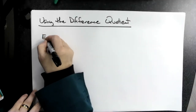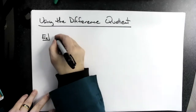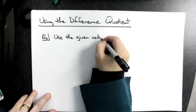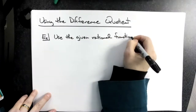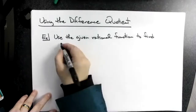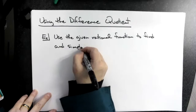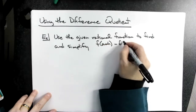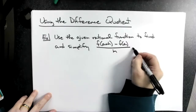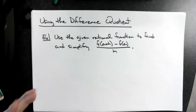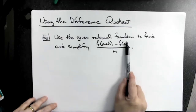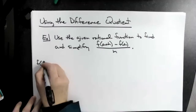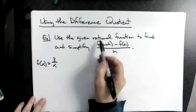The directions are going to tell you to use a given rational function to find and simplify f(a+h) minus f(a), all over h. Nowhere in the directions will they use the word 'difference quotient,' but that formula is the difference quotient. They would also give you the function — say f(x) equals 3 over x — because they told you it was going to be rational.